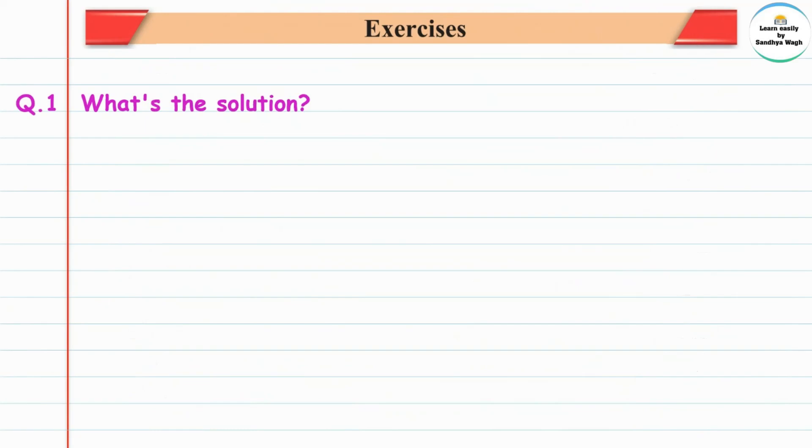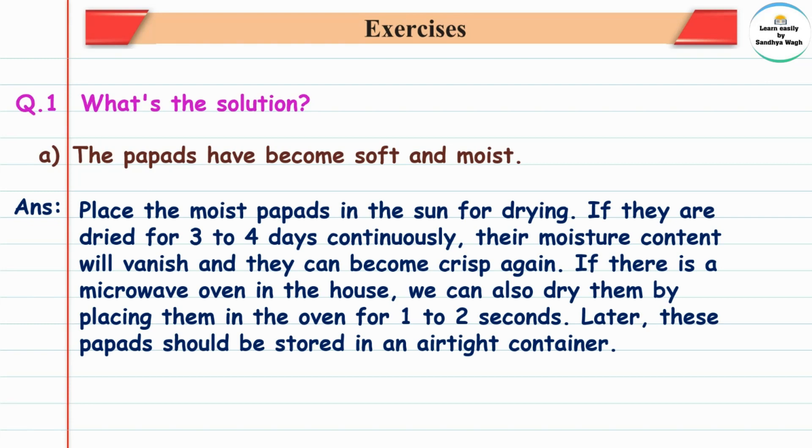First question: What's the solution? The papads have become soft and moist. If papads have become soft and moist, what solution can be applied? Answer: Place the moist papads in the sun for drying. If they are dried for three to four days continuously, their moisture content will vanish and they can become crisp again.